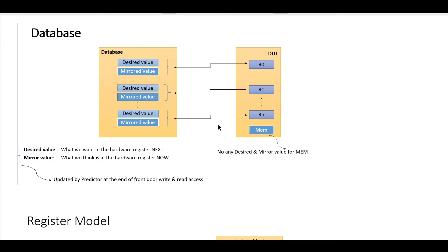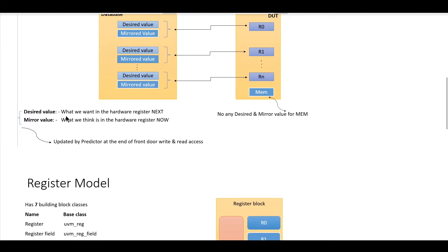The desired value is what we want in the hardware register next. The mirror value is what we think is in the hardware register now. For example, if register R0 has a value of 5, the mirror value will also contain 5, which is an exact mirror image of the DUT register R0. This desired and mirrored value will be updated by the predictor at the end of a frontdoor read or write access.